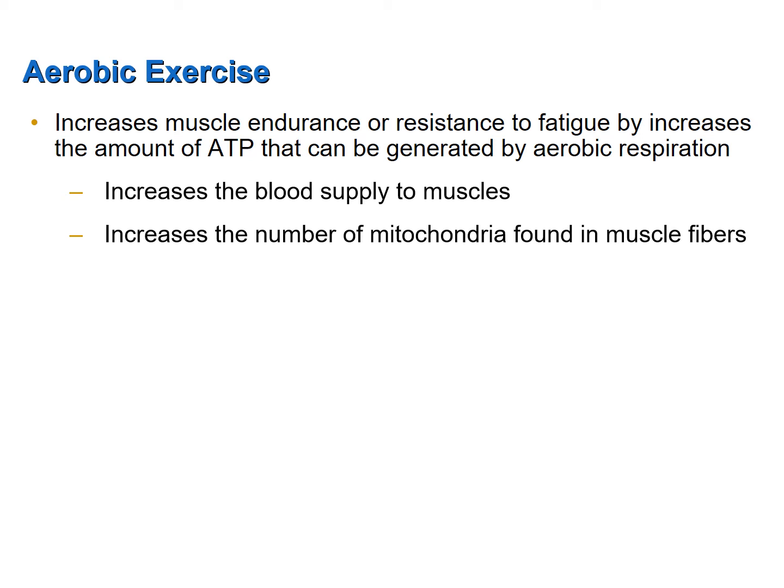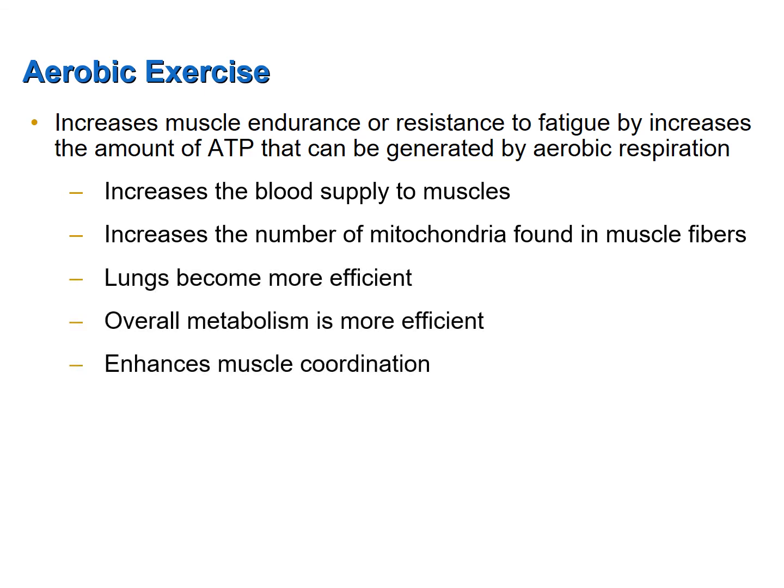New blood vessels literally form, which increases the supply of blood and oxygen to skeletal muscles. However, an increase in blood supply can only get you so far — you have to have enough mitochondria to utilize the increase in oxygen delivery to skeletal muscle fibers. So also what occurs as a result of aerobic exercise is an increase in mitochondria, meaning there is now an increase in supply of oxygen and an increase in utilization of that oxygen for aerobic respiration through an increase in the number of mitochondria in skeletal muscle fibers.